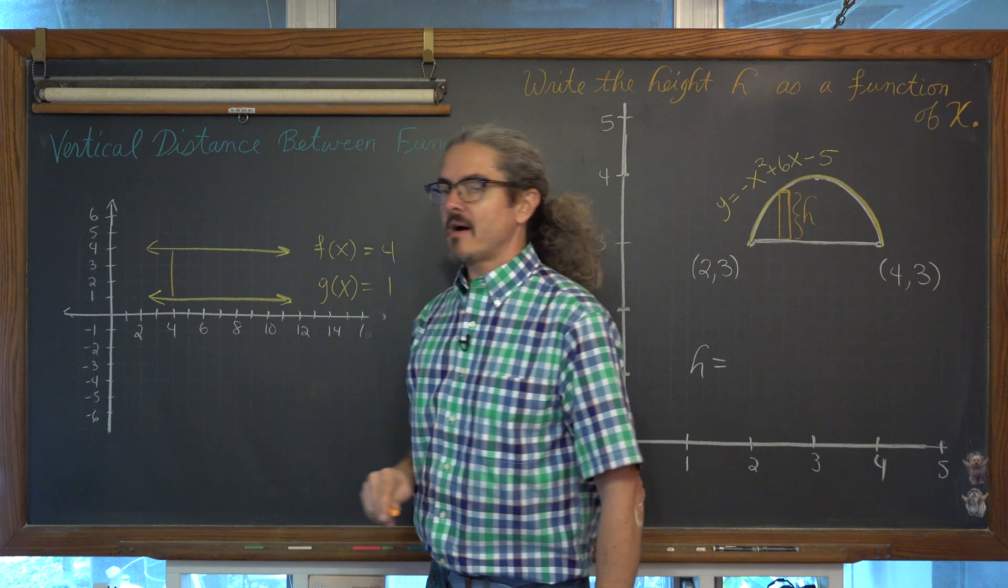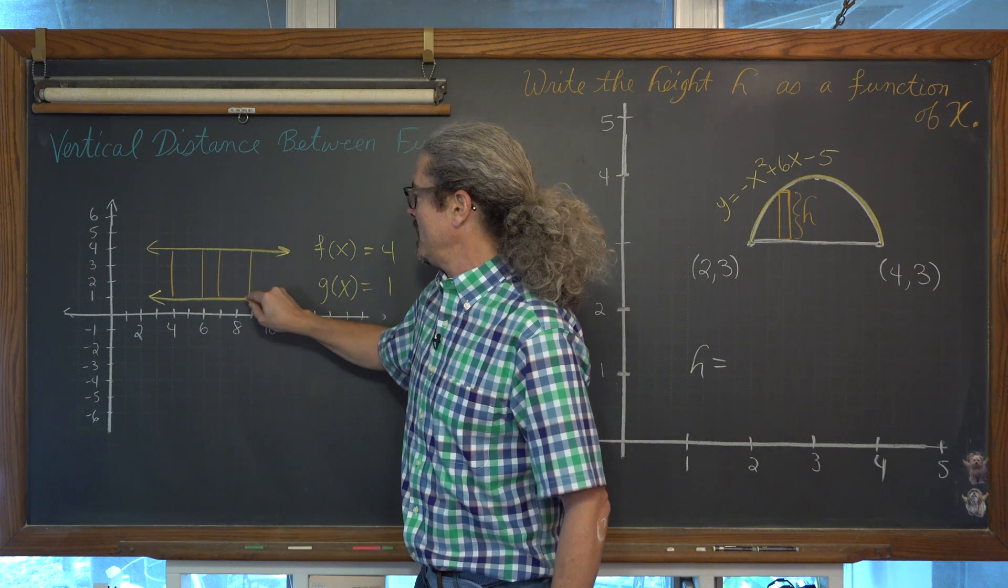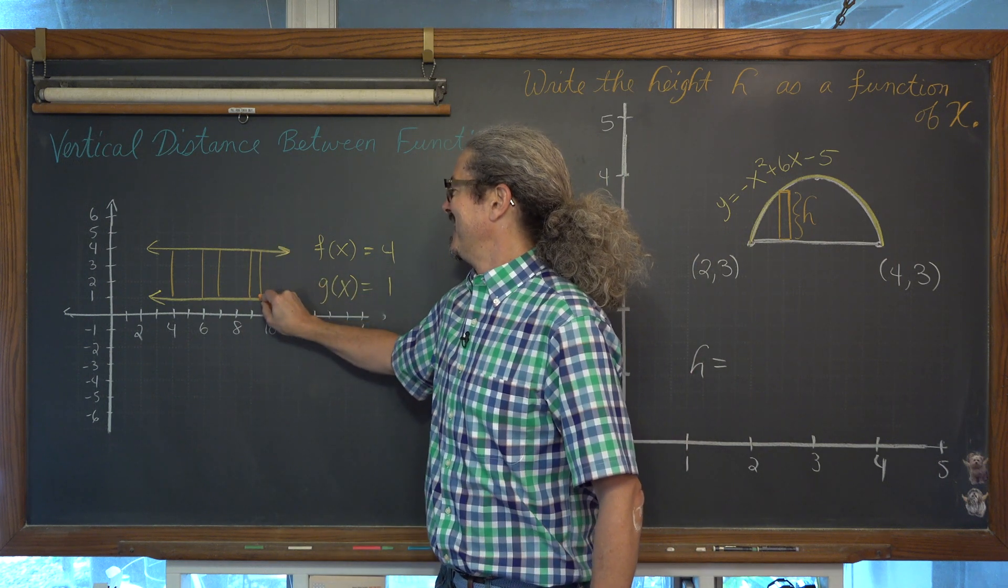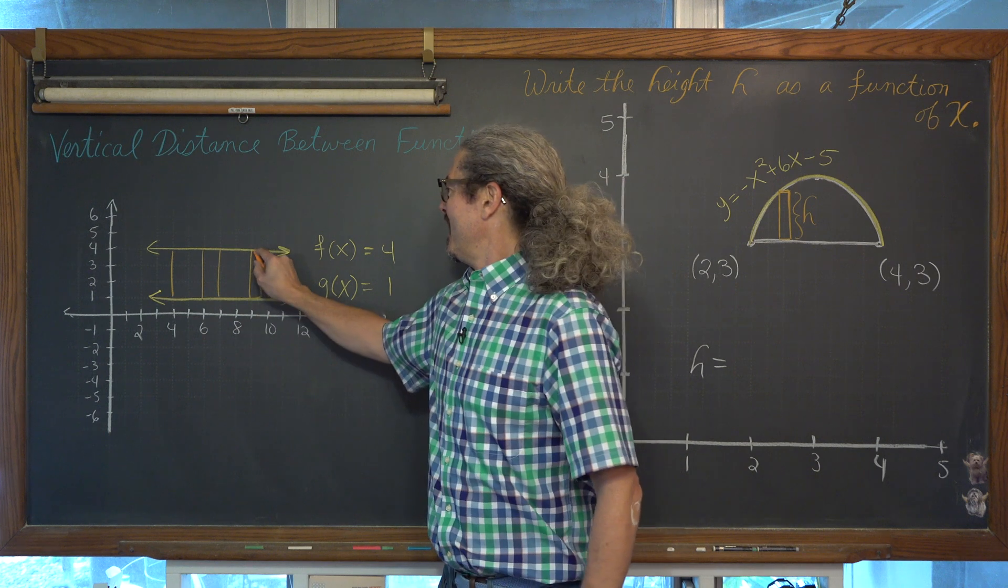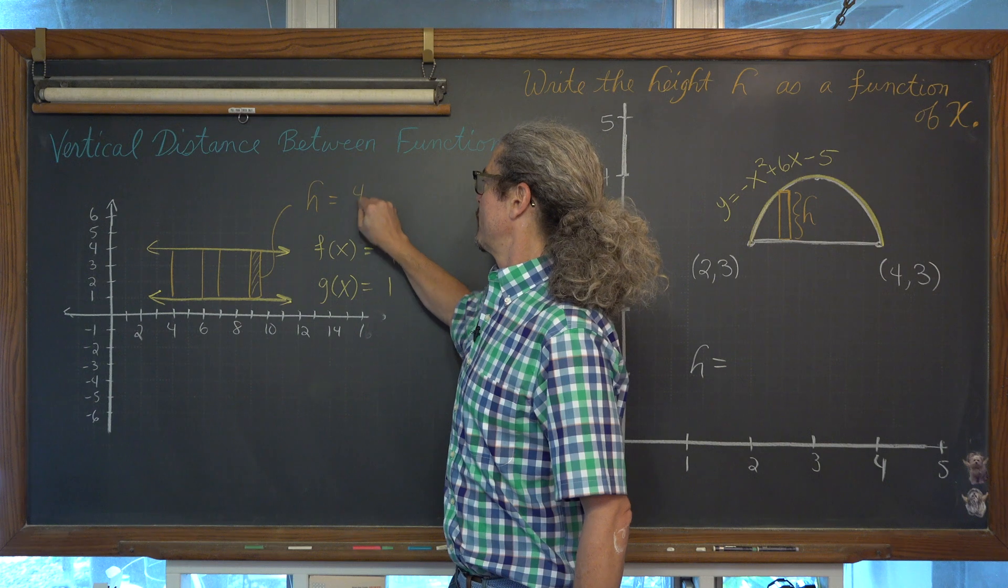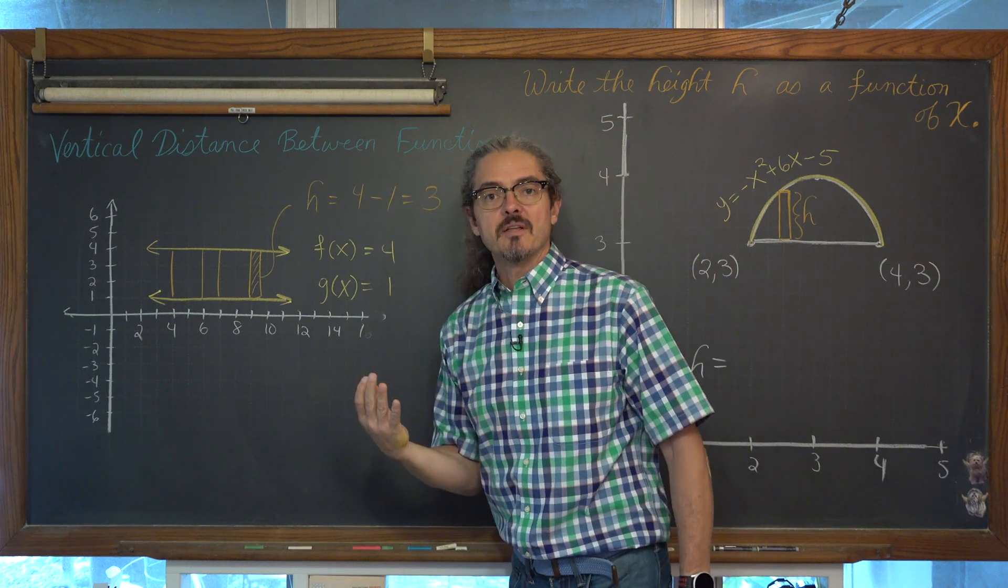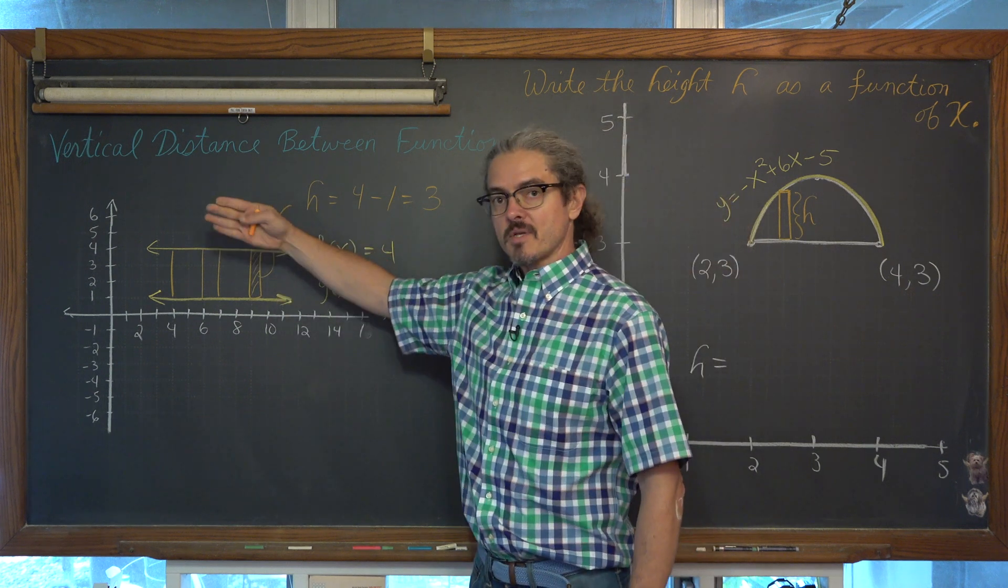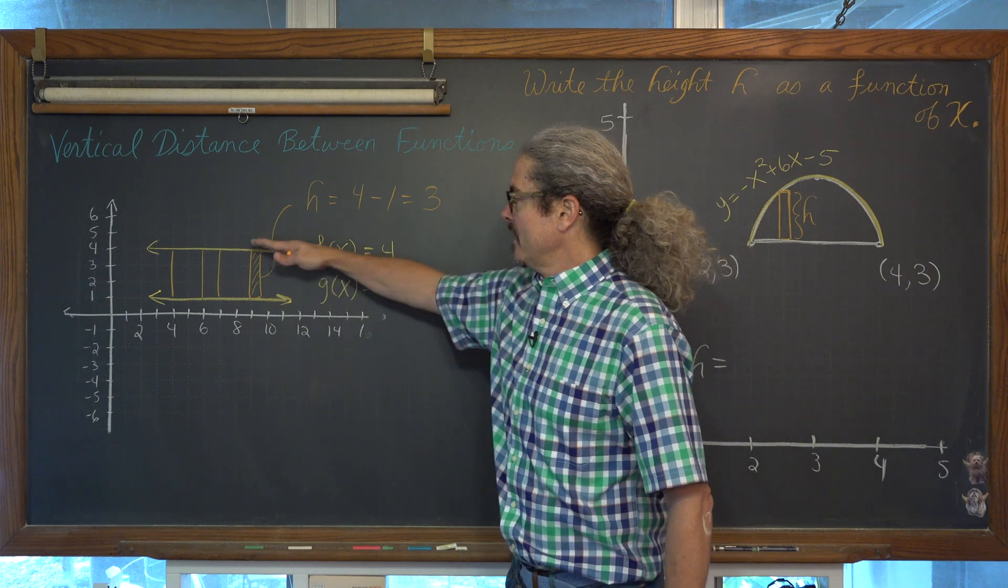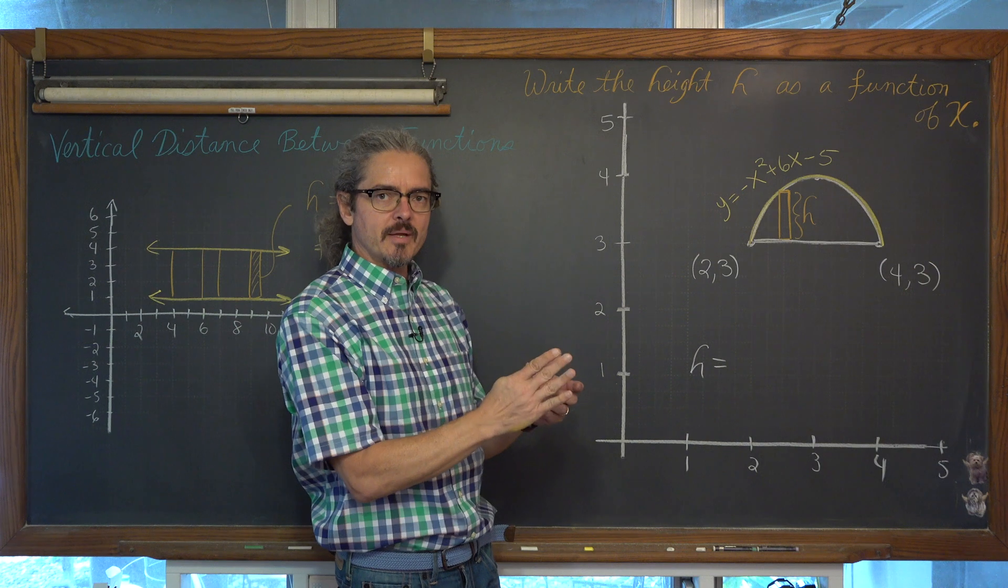They all told me that the height of that rectangle was equal to 4 minus 1, which is equal to 3. And that was fantastic. If you can answer this question and see the vertical distance between the line y equals 4 and y equals 1 maintains a constant distance of 3, then you actually know how to answer this question fundamentally.